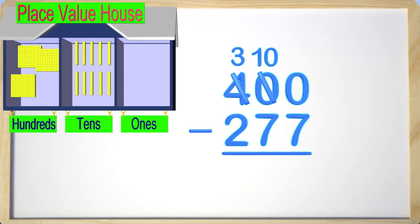Now we can see that we have three hundreds in the hundreds place, ten tens in the tens place, and zero ones in the ones place. We still need to borrow to be able to subtract in the ones place. But now that the tens place has a ten in it, we can borrow from that.